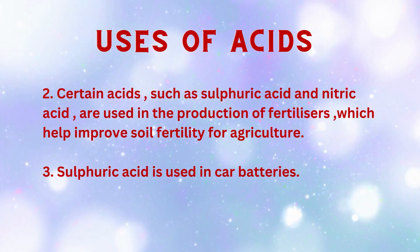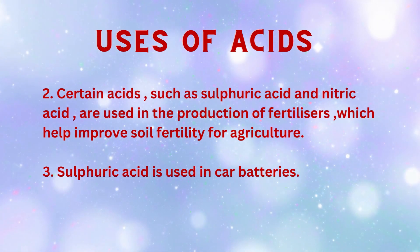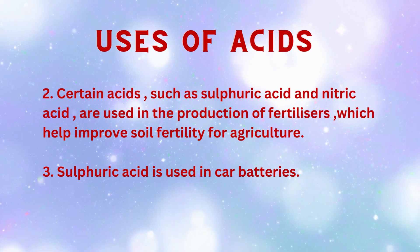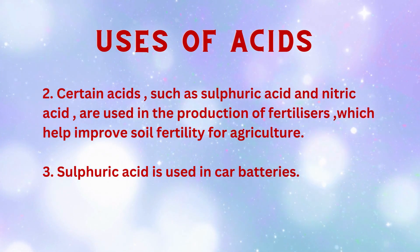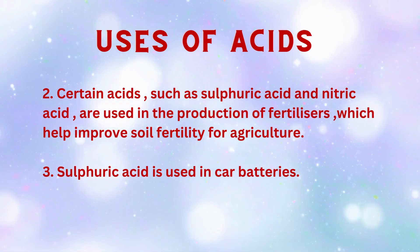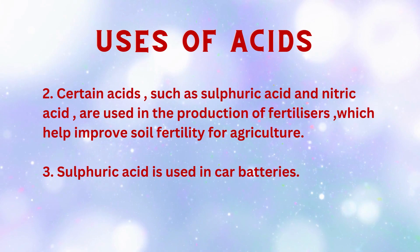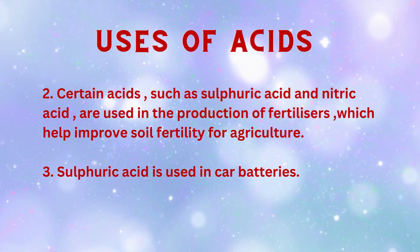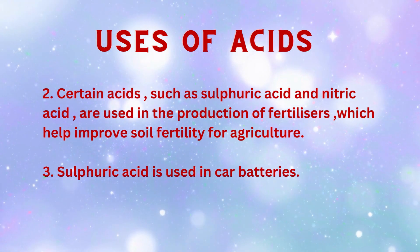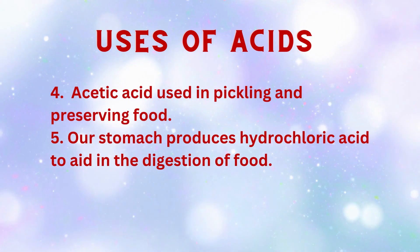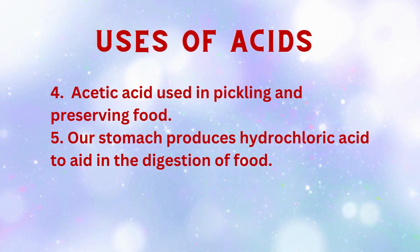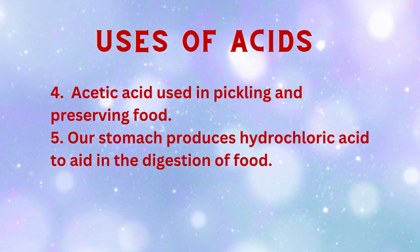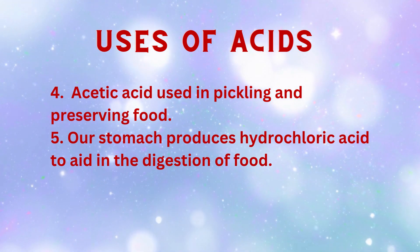Certain acids such as sulfuric acid and nitric acid are used in the production of fertilizers, which help improve soil fertility for agriculture. Sulfuric acid is used in car batteries, and acetic acid is used in pickling and preserving food.